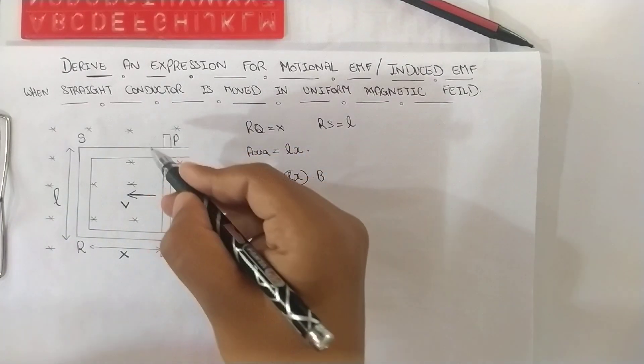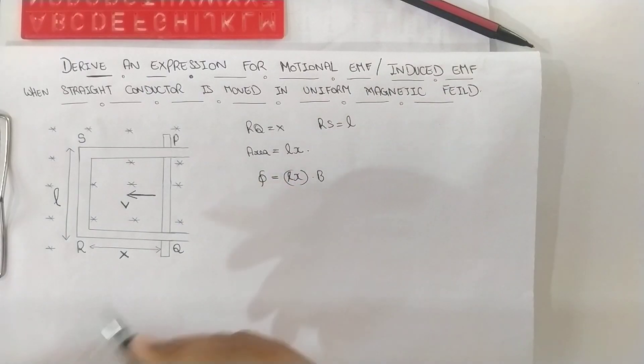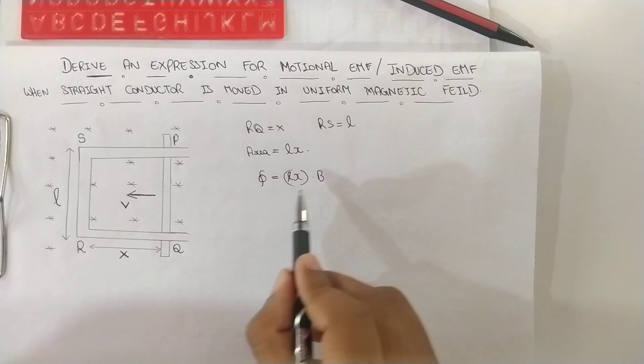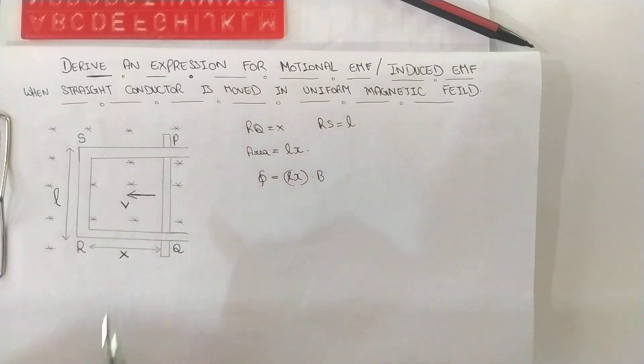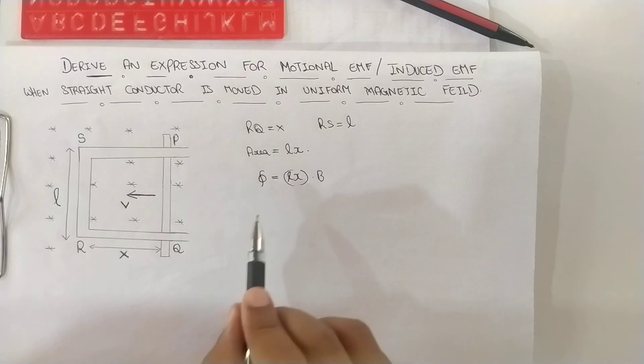Of these stars, the symbol here, the magnetic field B into the area enclosed by the rectangular conductor gives us the flux.